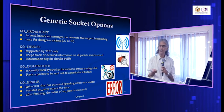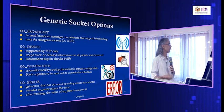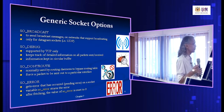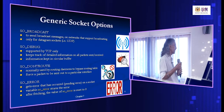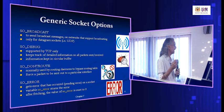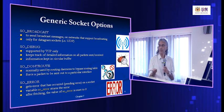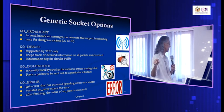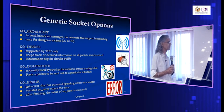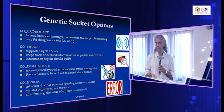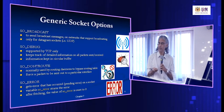SO_DONTROUTE basically means don't use routing tables. Normally when a packet comes into a machine, it goes through a routing table and routing algorithm before being sent out to a particular interface. If you set this option on, you bypass the routing table and force the packet to be sent to a specific machine or interface directly. By default it's off — unless for a specific reason you need to force a packet to a particular interface.